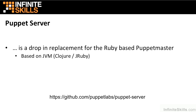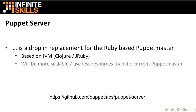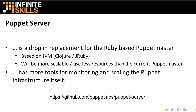Ruby will remain the scripting language of the Puppet environment, while the server itself will run on top of the JVM and be able to use the threading and performance capabilities of the Java Virtual Machine. This means that a Puppet Server will be more scalable and use fewer resources than current Puppet Master environments. Scaling Puppet Masters has been a sticking point, and the Puppet Server will use a slightly different technology stack to allow for more scalable systems and more tools for monitoring and scaling the infrastructure itself.